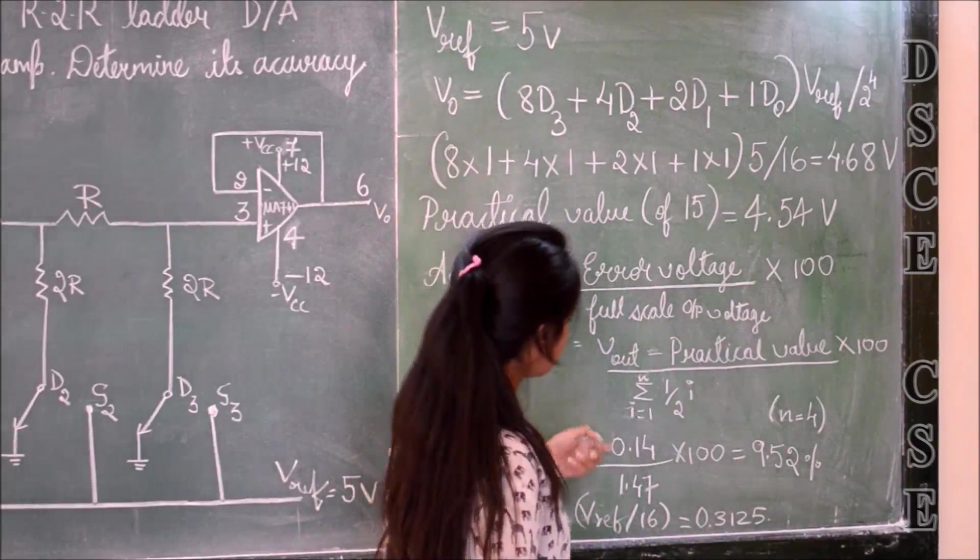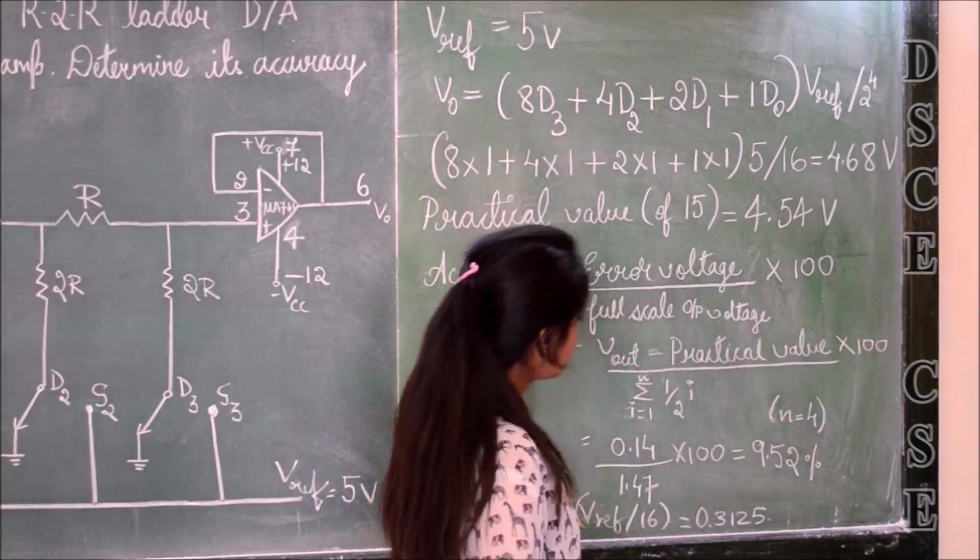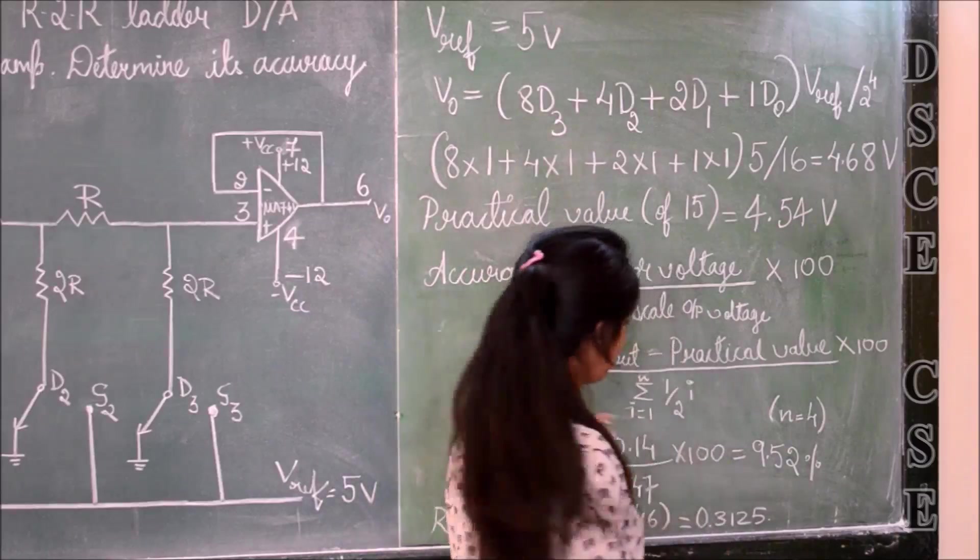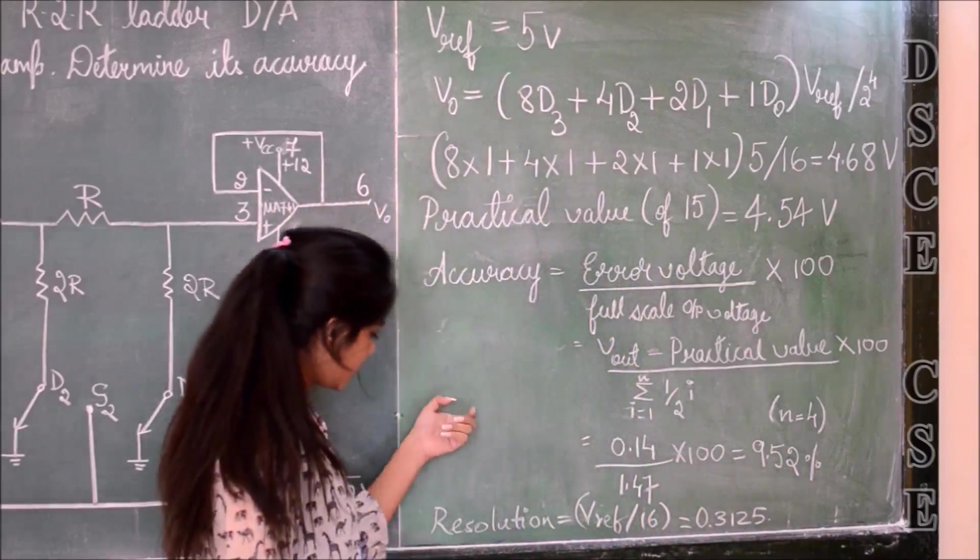After substituting the values, after calculating the Vout practical value and everything, we get the value of accuracy as 9.52 percent. So that is the accuracy.